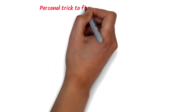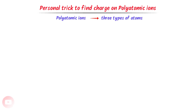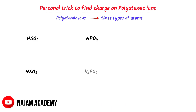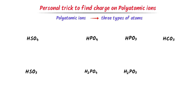Now let me teach you my personal trick to find charge on polyatomic ions when there are 3 different types of atoms. Consider hydrogen sulfate, or bisulfate. It contains sulfate SO4, which has negative 2 charge, and hydrogen, which has positive 1 charge. Positive 1 plus negative 2 equals negative 1. Hence, the charge on hydrogen sulfate or bisulfate is negative 1.